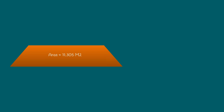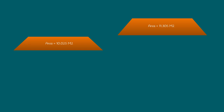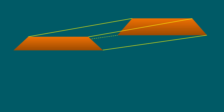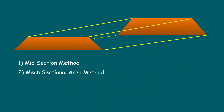Now let us see how the earthwork quantity is calculated and what other different methods are adopted. Nowadays, computer technology has improved a lot. Quantities can be calculated through AutoCAD, MS Excel, and many specialized dedicated software available for road projects. However, here we will see the types of methods commonly used in university exams and public service exams. Those are: 1. Midsection method, 2. Mean sectional area method, and 3. Prismoidal method. We will see these three types in detail and derive the formulas for each method.